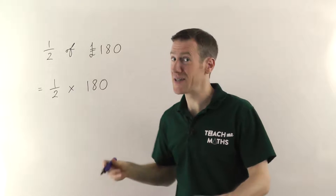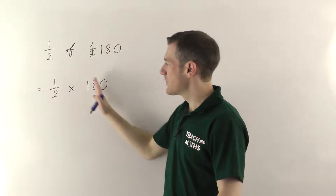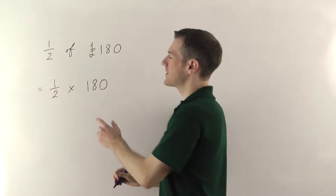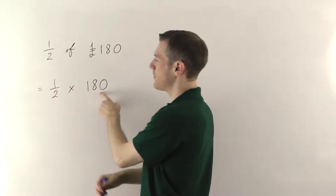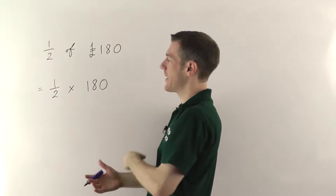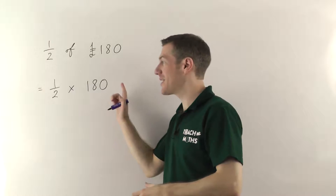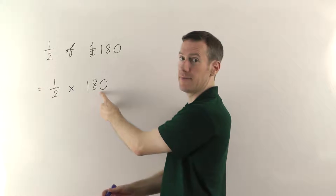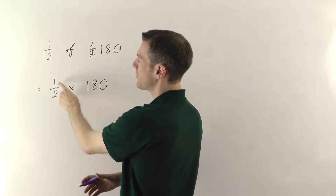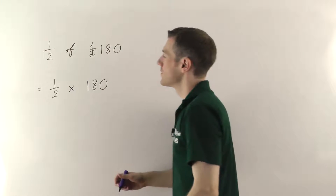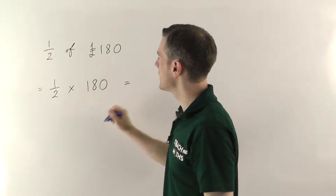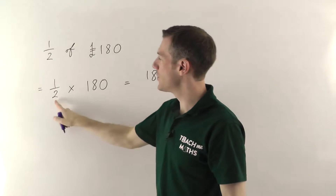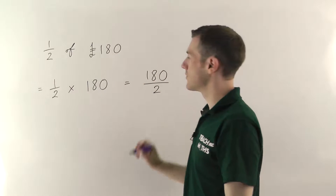Obviously a half of 180 pounds is going to be 90 pounds, but in terms of the way you do it when it gets more complicated and you can't immediately see what the answer is, effectively you're timesing the fraction by the amount you're dealing with — in this case 180 pounds. And if you remember from the multiplying fractions video, if you're multiplying a fraction by a whole number, the fraction just multiplies on the top. So what we've got is 1 times 180 on the top, and on the bottom the 2 doesn't change — so that goes over 2.